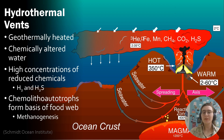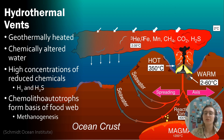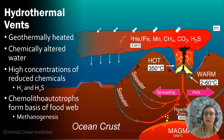This water is chemically altered and has high concentrations of reduced chemicals such as hydrogen and hydrogen sulfide. And in the absence of light, the food chain is supported by chemolithoautotrophs, including those who undergo a process known as methanogenesis.